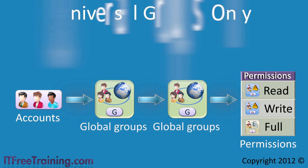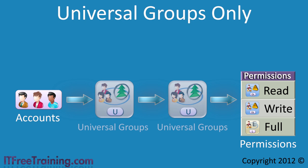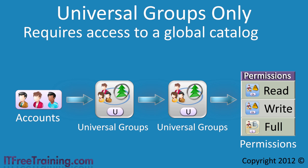Could you use universal groups? The answer is yes, you could. Universal groups are replicated to all global catalog servers in the forest. This means that as soon as you use a universal group you require access to a global catalog server. If all your domain controllers are global catalog servers this won't present a problem. If they are not, in order to work out group membership a global catalog server needs to be contacted, and if the global catalog server is over a WAN link this will slow everything down. You can see that if you use the wrong groups in a single domain single forest environment, Active Directory is fairly forgiving.